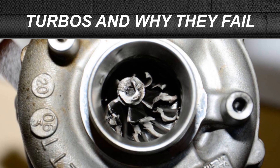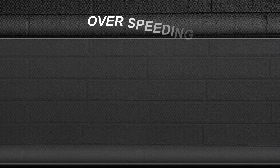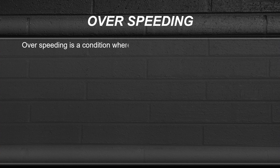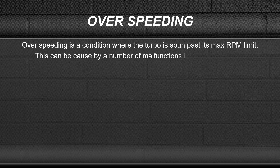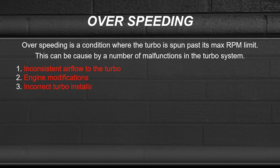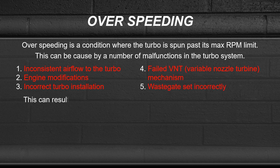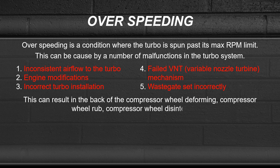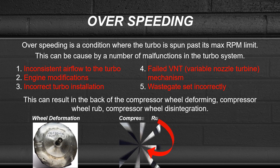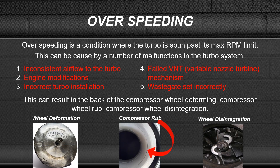Today we're going to look at turbos and why they fail. The first is over-speeding — a condition where the turbo is spun past its max RPM limit. This can be caused by inconsistent airflow to the turbo, engine modifications, incorrect turbo installation, a failed VNT (variable nozzle turbine) mechanism, or a wastegate not set correctly. This can result in the back of the compressor wheel deforming, the compressor wheel rubbing, or compressor wheel disintegration.